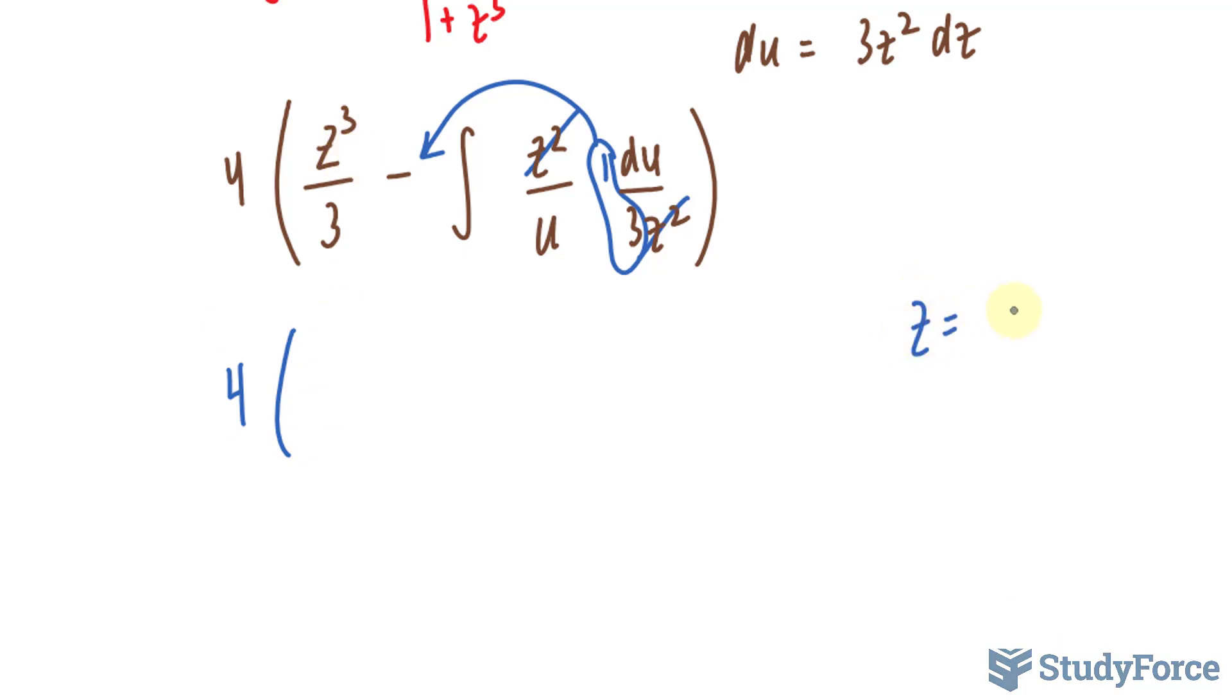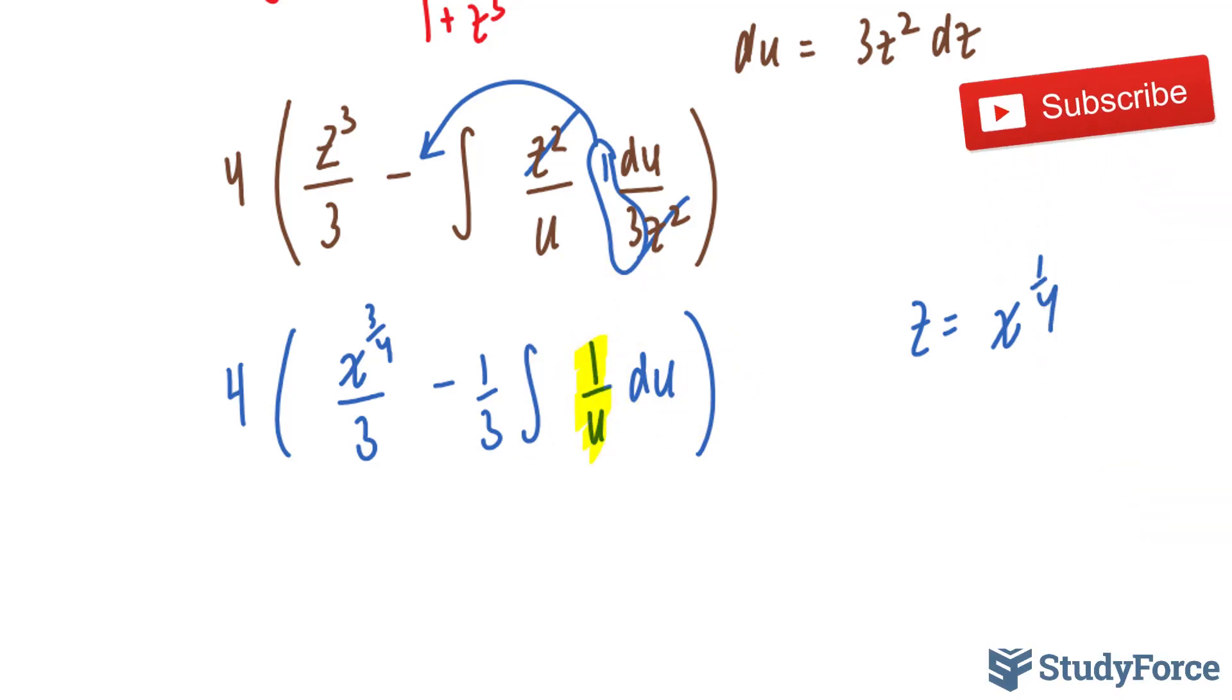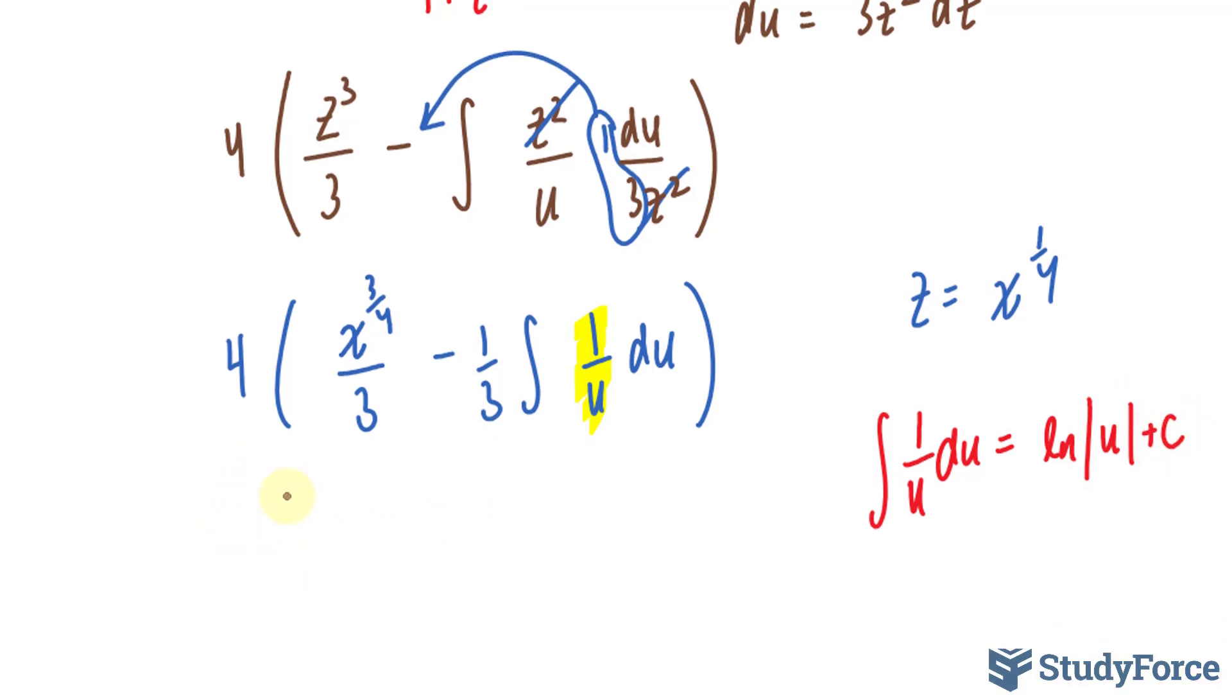Giving me 4 times z to the power of 3, and remember, z was set to x to the power of a quarter. So I can bring that back now that I've integrated. I have x to the power of 3 over 4 over 3, and I'll pull out this third times the integral of 1 over u du. This is a common integral that you should remember from now on. And in case you don't know it, it's 1 over u becomes ln absolute of u plus c.